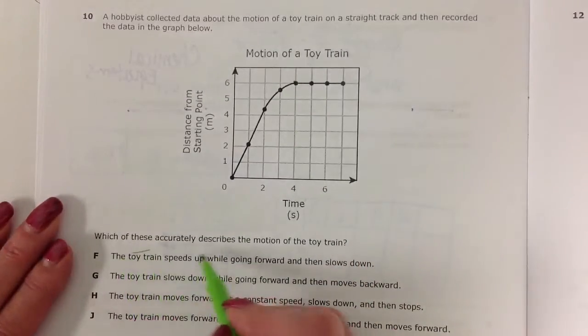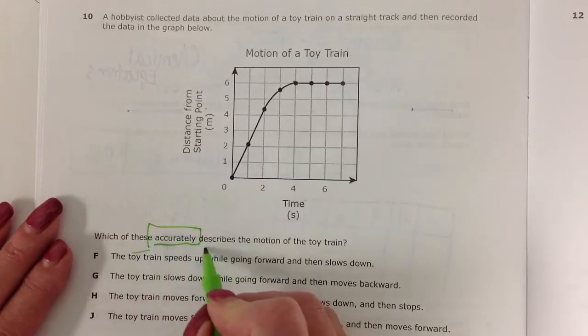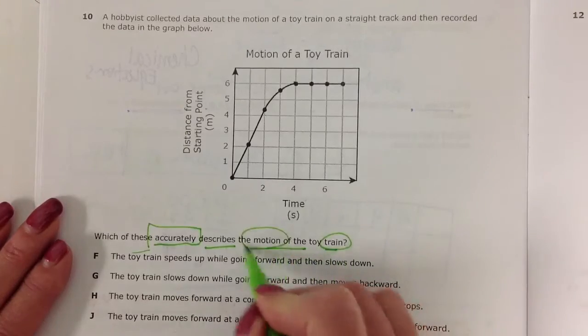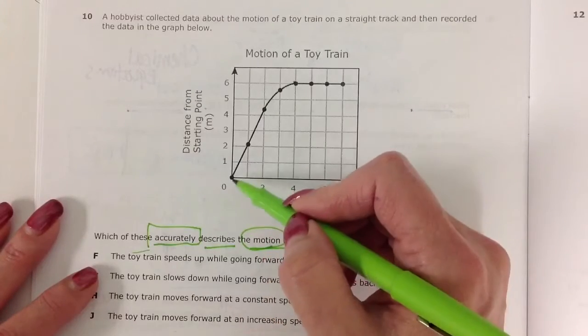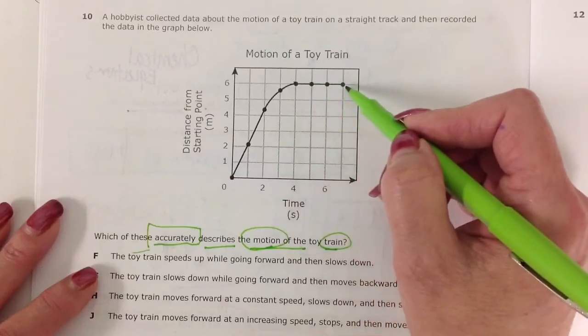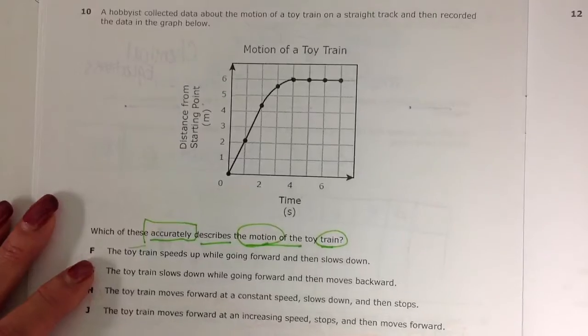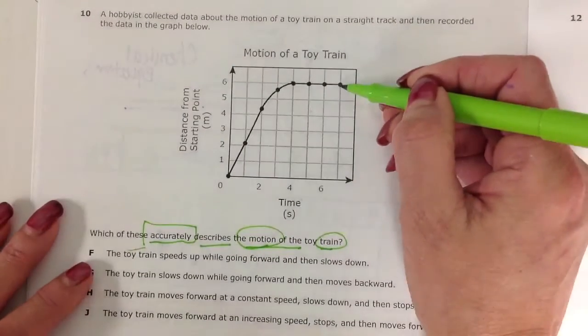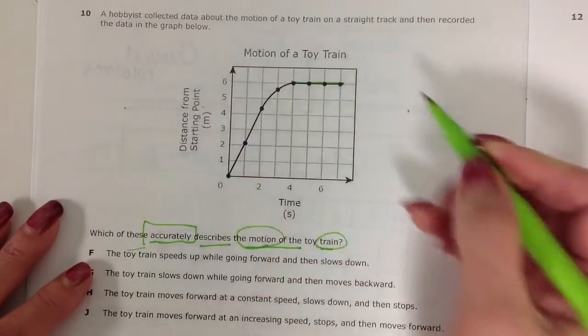Which of these accurately describes the motion of the train? So we want to describe the motion of the train. The train at this point is accelerating and then it kind of levels off and probably is then either not moving at all or has reached constant speed. But the distance isn't changing. So if the distance isn't changing at this point when it's leveled off, we know that it's stopped.